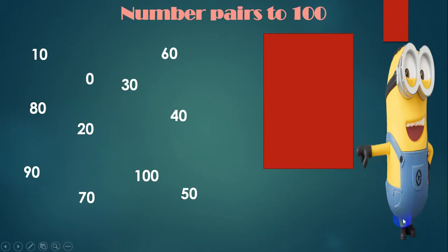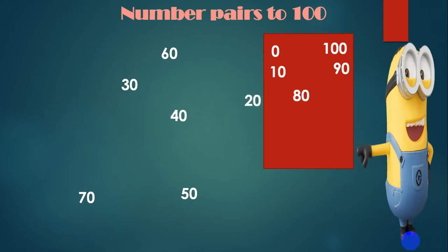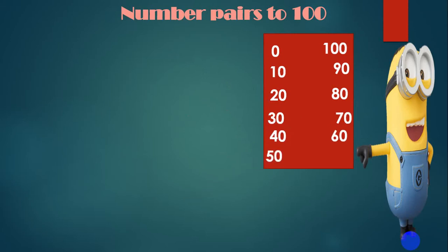This is the first number pair: 0 and 100 is equal to 100. 10 and 90, 20 and 80, 30 and 70, 40 and 60, 50 and 50. 50 plus 50 gives us 100.